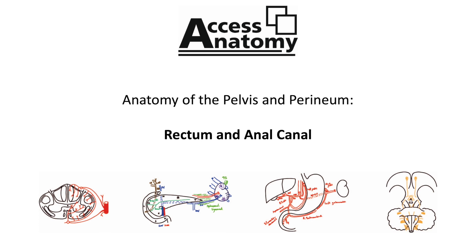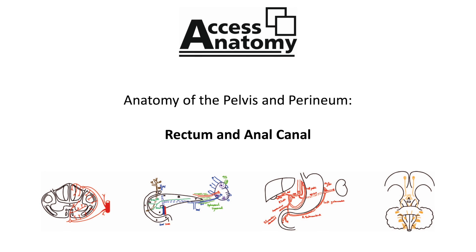The importance of this blood supply will be discussed once the anal canal has been detailed. The anal canal is the inferior extension of the rectum from the anorectal junction to the anus. It is approximately 4cm long and is usually collapsed except during defecation. The anal canal is surrounded by both the internal and external anal sphincters, which are important along with the anorectal junction created by puborectalis in maintaining faecal continence. At the anorectal junction, the wide dilated rectum abruptly narrows as it passes through the pelvic floor to form the anal canal.